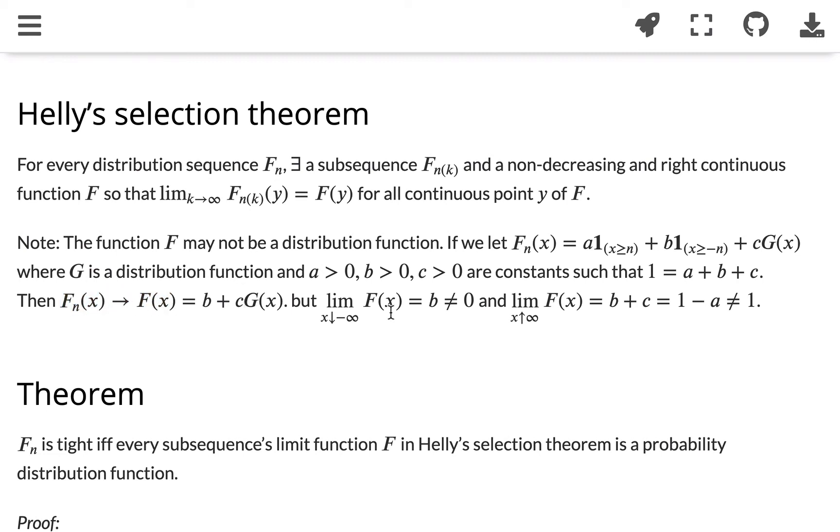When n gets larger and larger, this will become 0 and this will always be b. So x will always be greater than or equal to some minus n. And this is now changed. So we will get b plus c times gx.